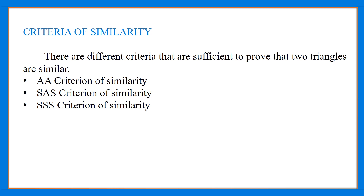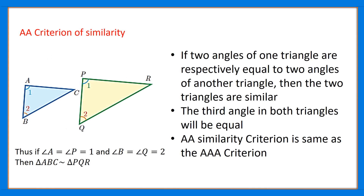First, let us look into the AA criterion of similarity. AA tells us Angle-Angle. Two triangles are similar if two angles of one triangle are respectively equal to the two angles of another triangle. In the given picture, angle A is equal to angle P and angle B is equal to angle Q in triangles ABC and PQR respectively.